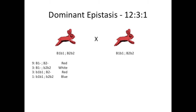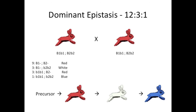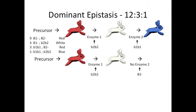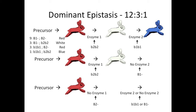Dominant epistasis is the flip side of the coin — one of the 3s joins the 9 to give a 12 to 3 to 1 ratio. For the pathway to go all the way to blue, both B1 and B2 must be homozygous recessive so that both enzymes 1 and 2 can be made. Note that B1 codes for enzyme 2, which appears second, so don't get confused. If the bunny is homozygous recessive for B2 but has at least one dominant B1 allele, the pathway will stop at white. And if the bunny has at least one dominant B2 allele, it doesn't matter what genotype it is for B1 — the pathway stops at red. That's dominant epistasis.